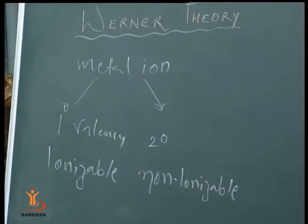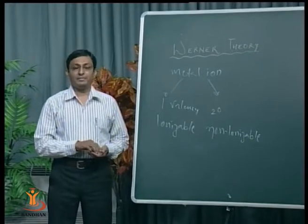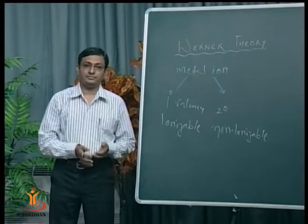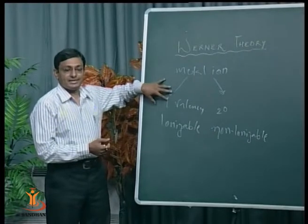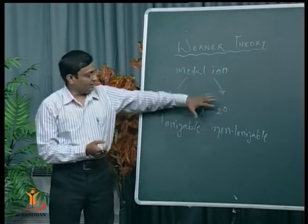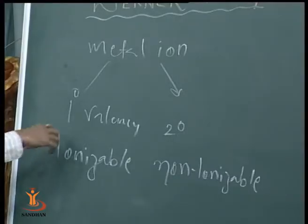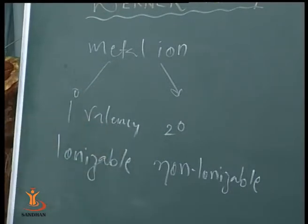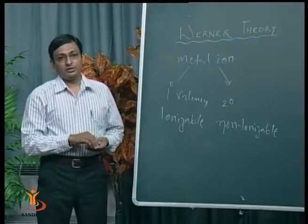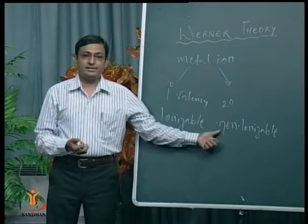The central metal ion has two types of valency — primary and secondary. Primary valency of the metal ion is satisfied by an ionic bond, while secondary valency is satisfied by a coordinate covalent bond. Those atoms or molecules which link with a central metal ion by secondary valency are called ligands.